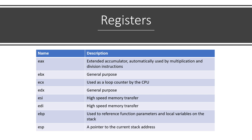EBX and EDX are general purpose. ESI and EDI are designed for high-speed memory transfers, so they're really built to transfer memory quickly. ECX is typically used as a loop counter by the CPU, so if we're moving through a loop and want to keep incrementing a value, ECX is usually where that happens. The two registers you wouldn't ever really modify directly would be EBP and ESP. ESP is a pointer to the current stack address — the stack represents the RAM memory for your current program, that segment of memory you get in protected mode.